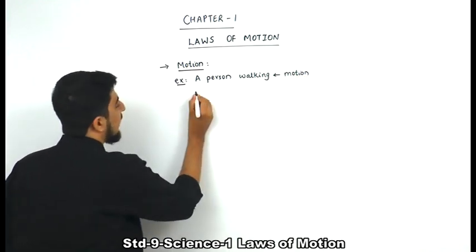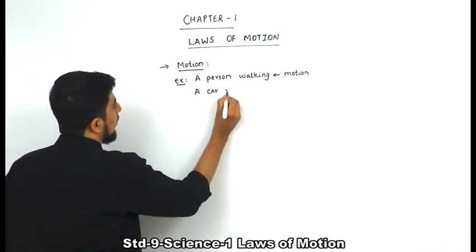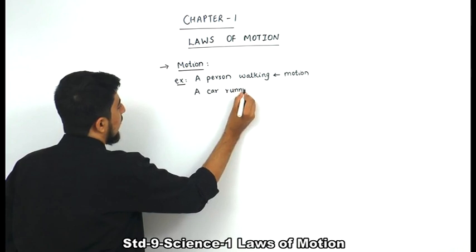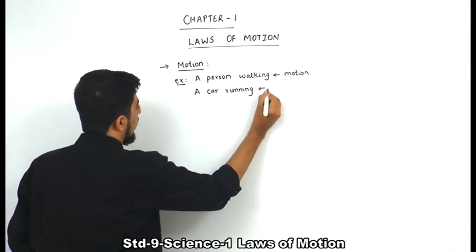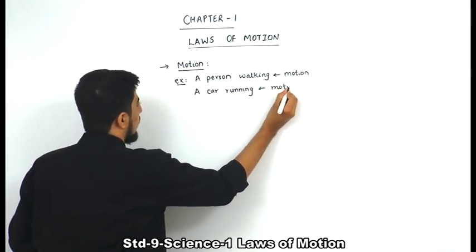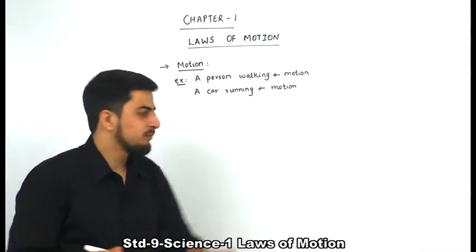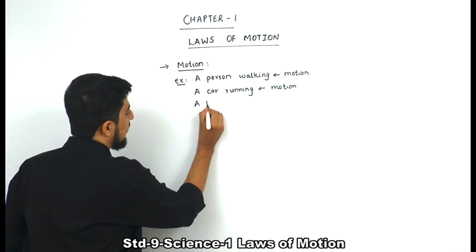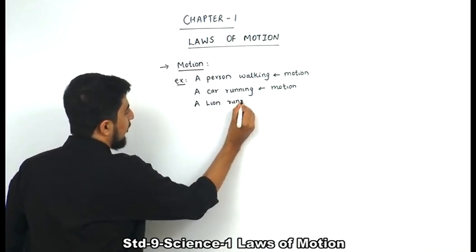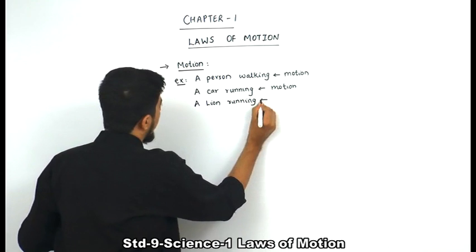Similarly, a car running - this is also an example of motion. I can say a lion running - this is also an example of motion.